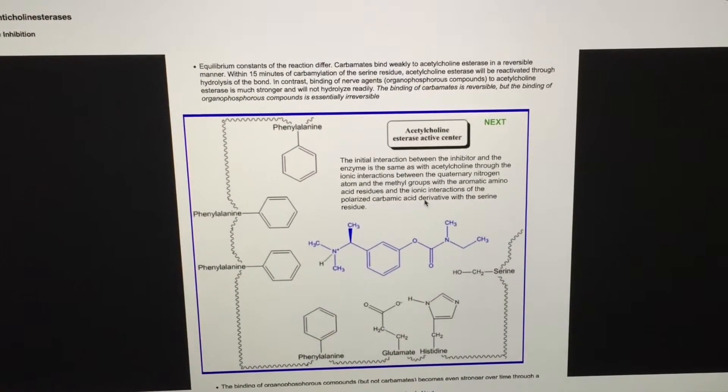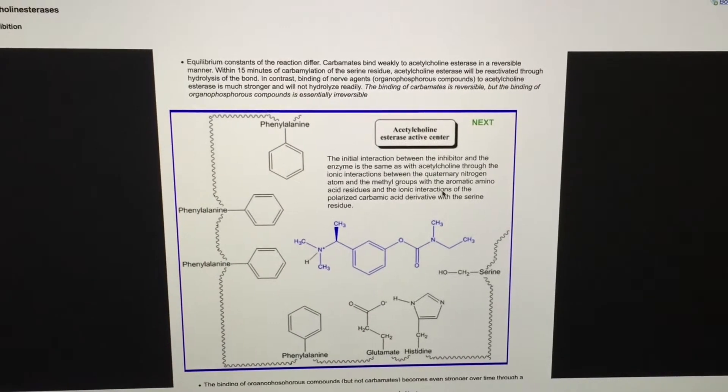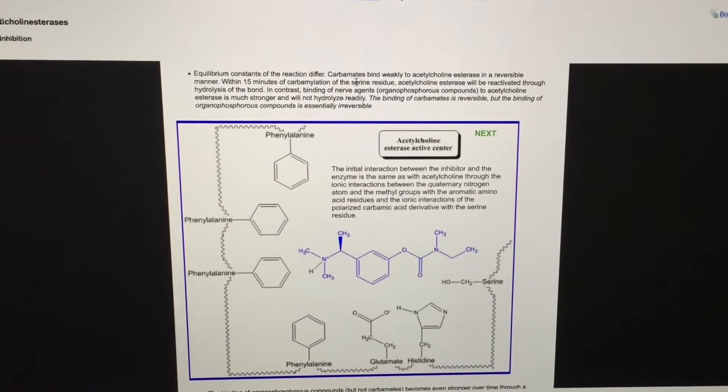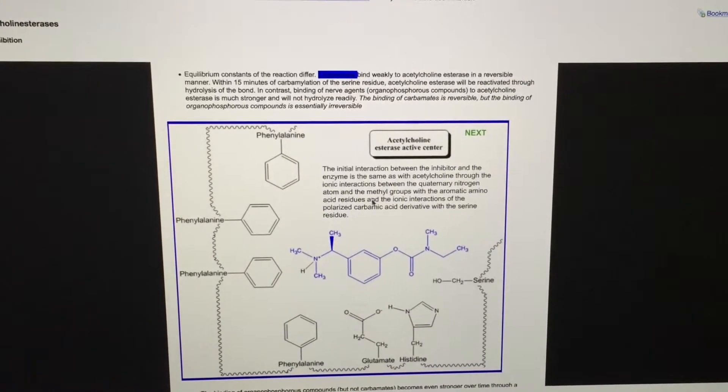In this scenario, we will replace acetylcholine with a carbamate acetylcholinesterase inhibitor. Specifically, a molecule of neostigmine will be used as an example of a prototypical carbamate agent.